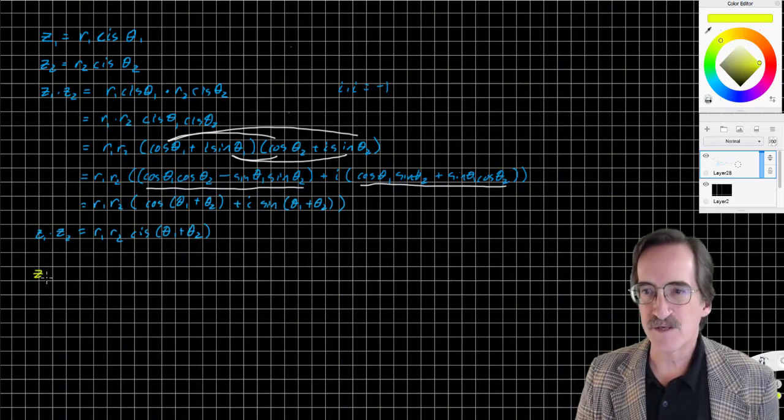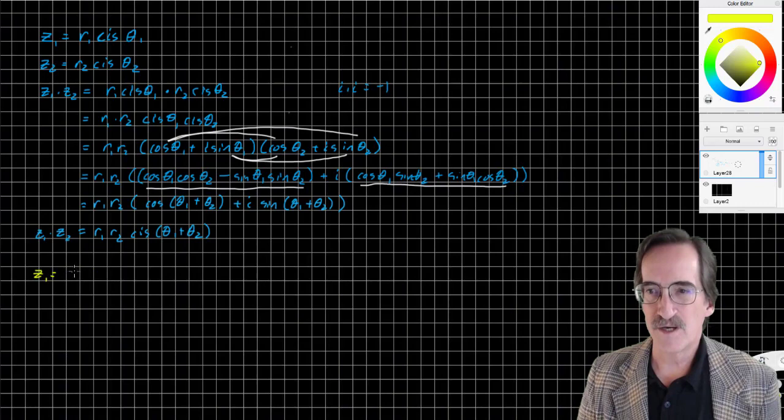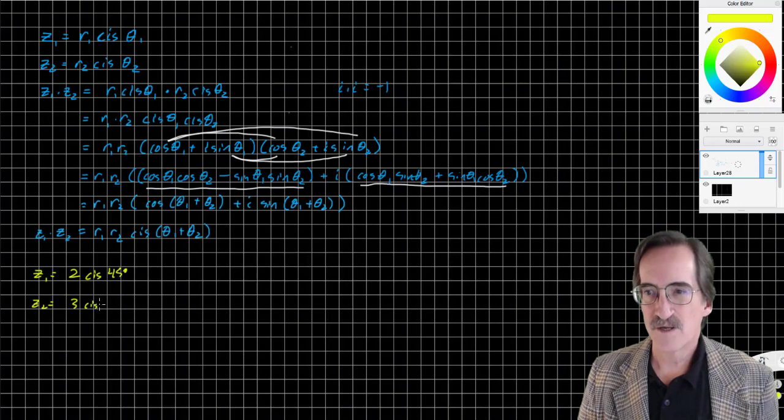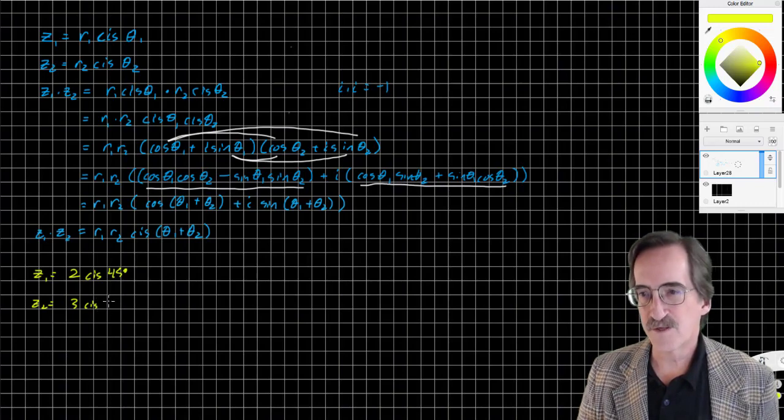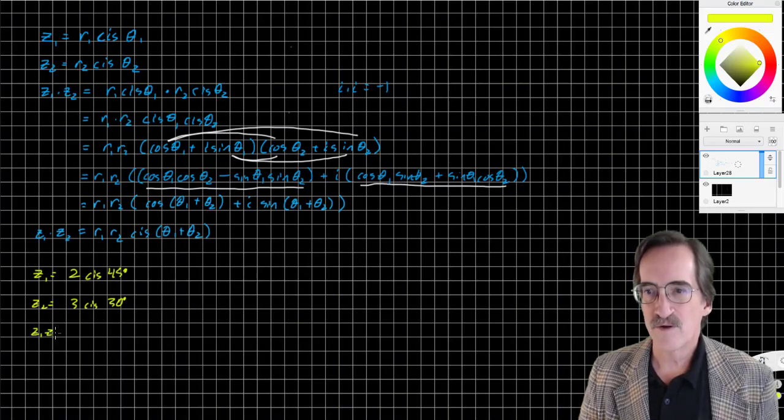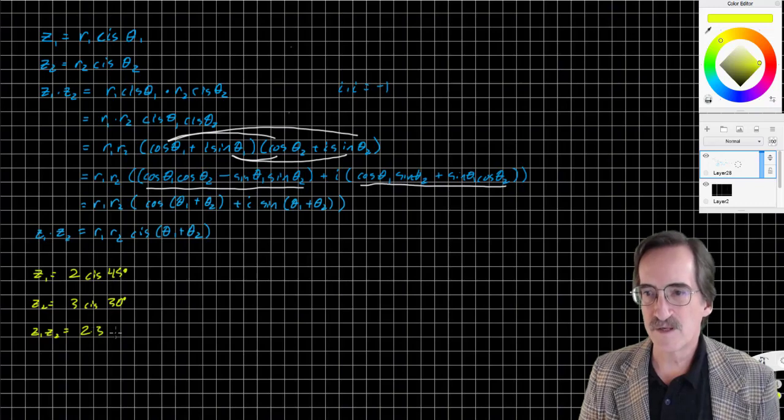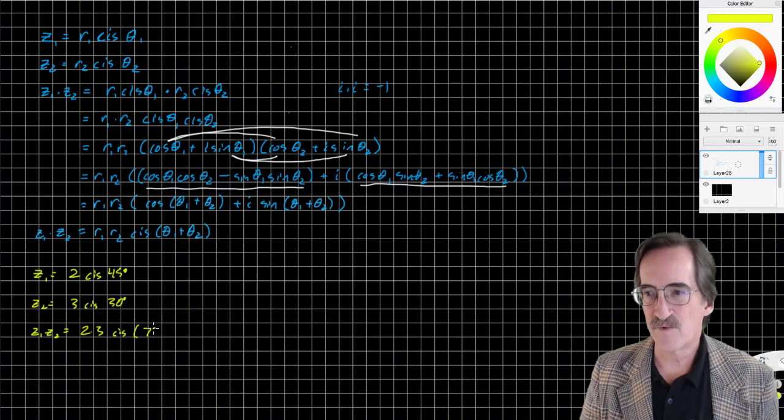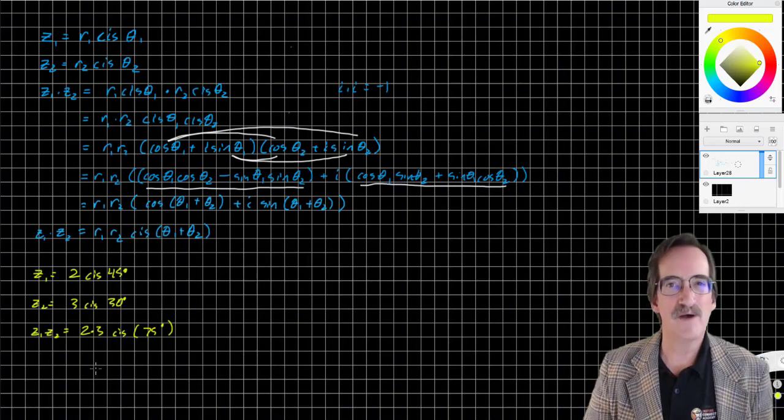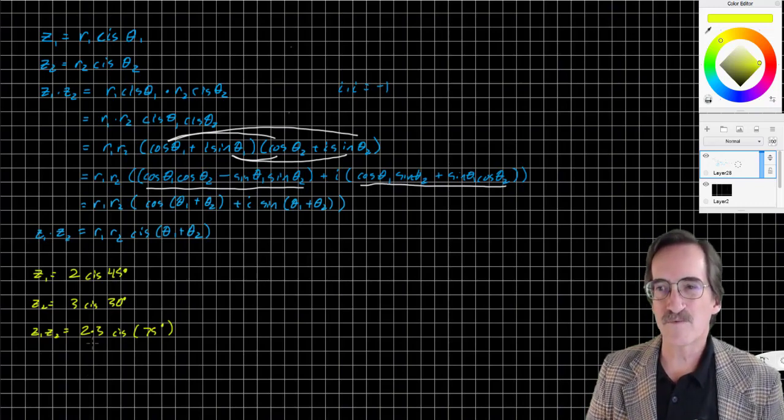So let's say Z1 is 2 cis 45 degrees, and Z2 is 3 cis 30 degrees. Then Z1 times Z2 is 2 times 3 cis 45 plus 30, or 75 degrees. 6 cis 75 degrees. That's really kind of a cool little result.